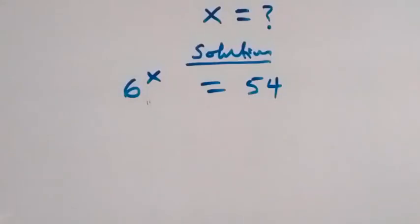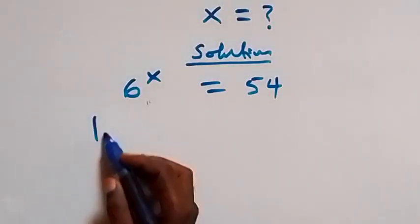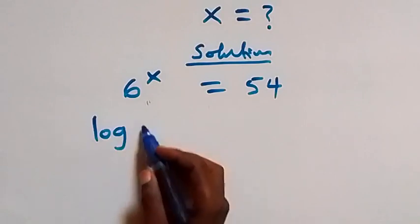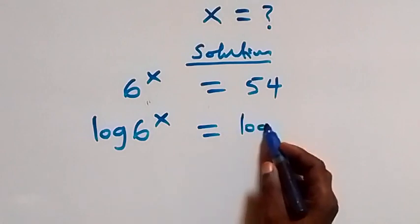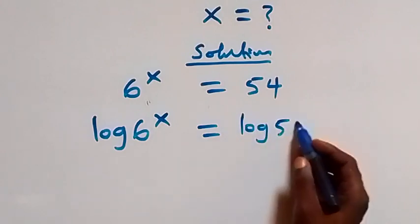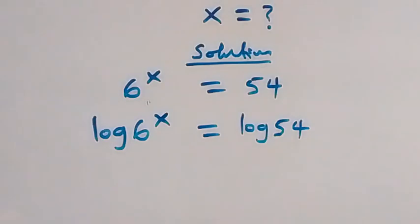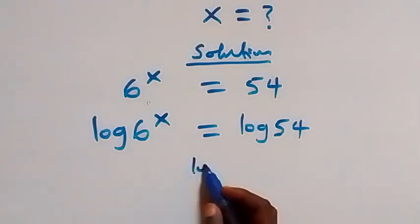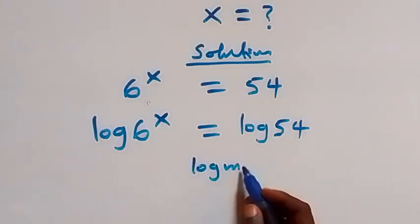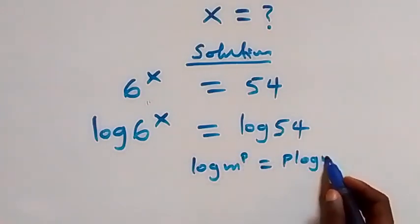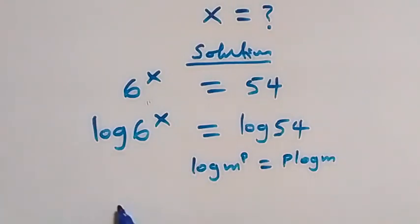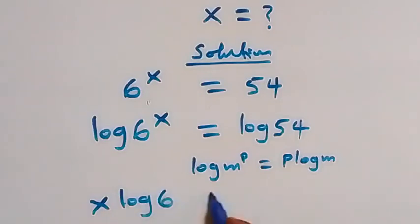Let's take the log on both sides. We have log 6 raised to power x equals to log 54. Applying the power law of logarithms — log m raised to power p equals to p log m — we get x log 6 equals to log 54.